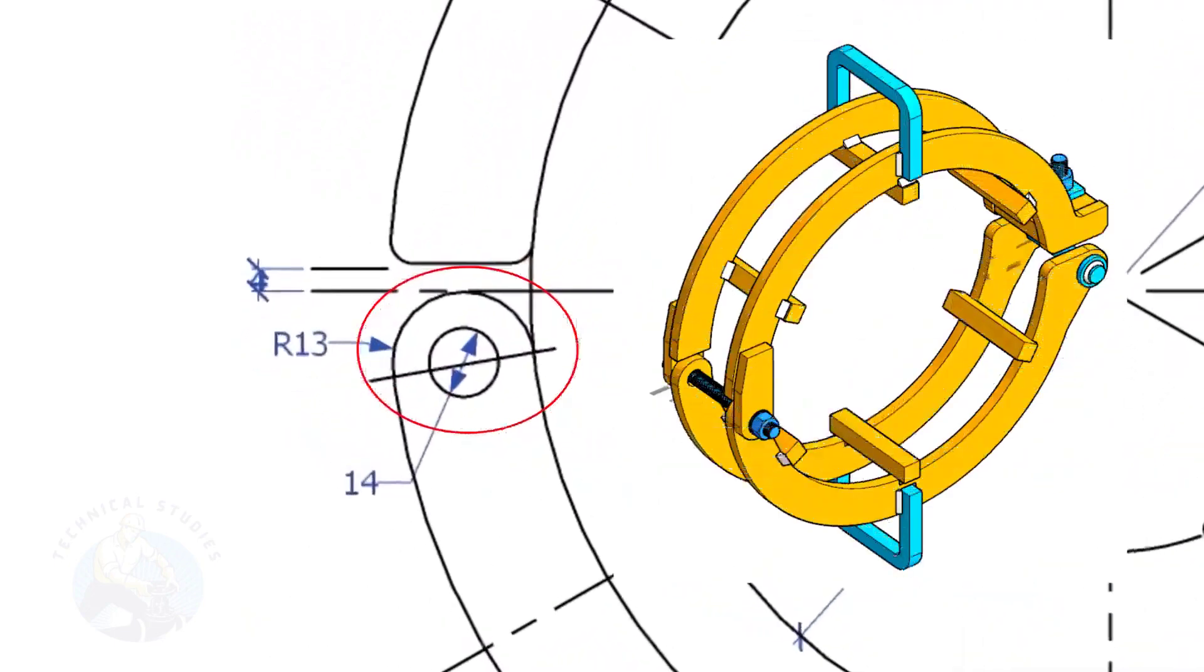Mark a half circle as shown, punch mark the center of the hole. There are two numerous items like this. Tack weld the two pieces and drill it together.